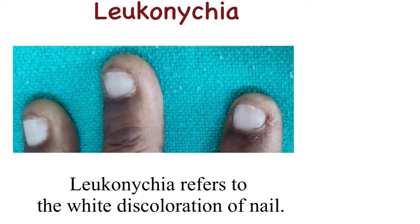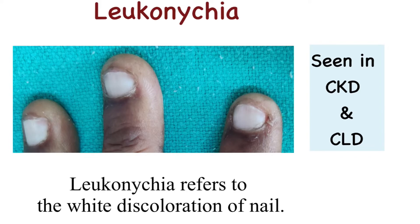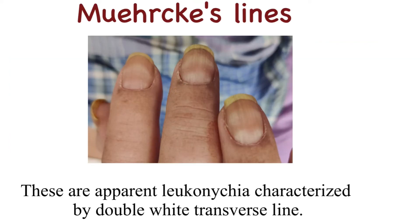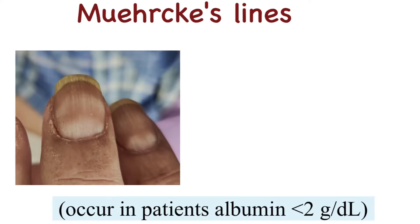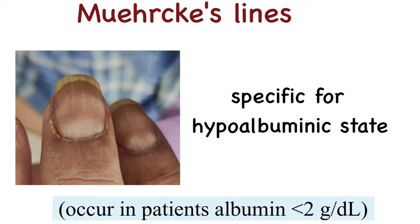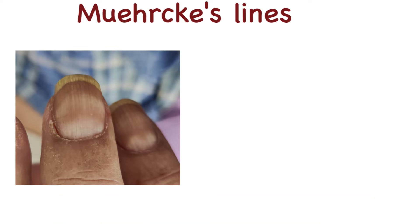Leukonychia refers to white discoloration of the nail and is seen in chronic kidney and liver diseases. Muehrcke's lines are apparent leukonychia characterized by double white transverse lines. This is specific for hypoalbuminemic states, and specially occurs in patients with albumin less than 2g per deciliter.